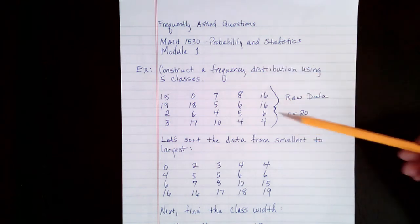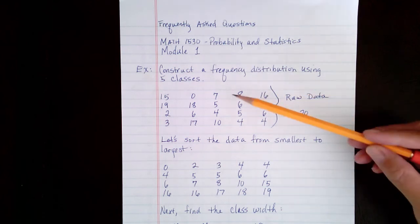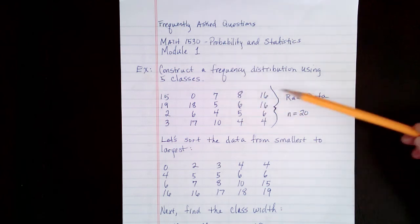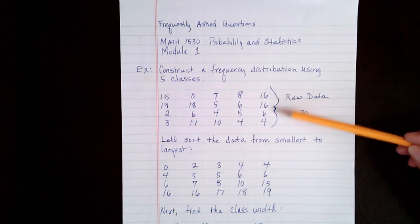It is on constructing a frequency distribution, and here we're asked to use five classes. Here is the data that we're given. Notice this is raw data and that the number of data is 20, so we have 20 data values.